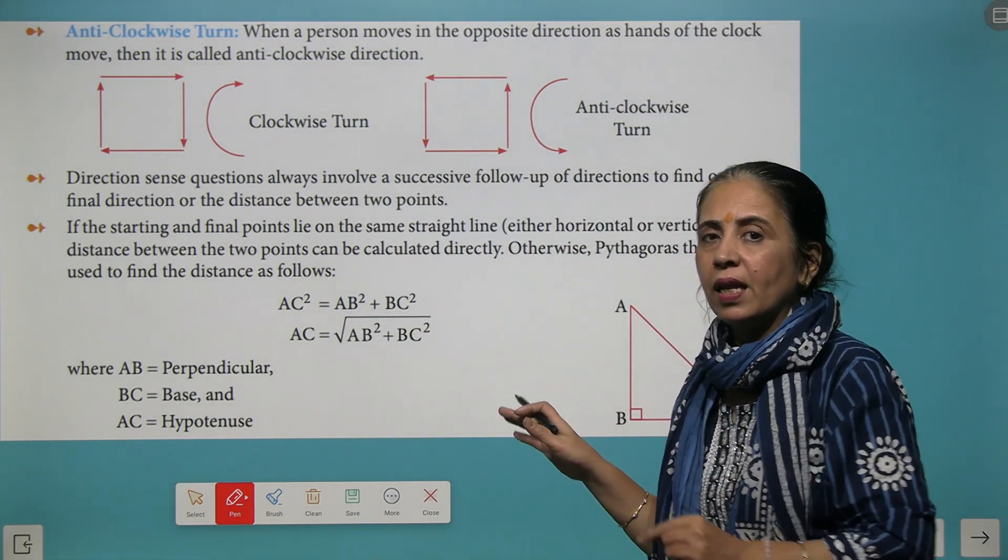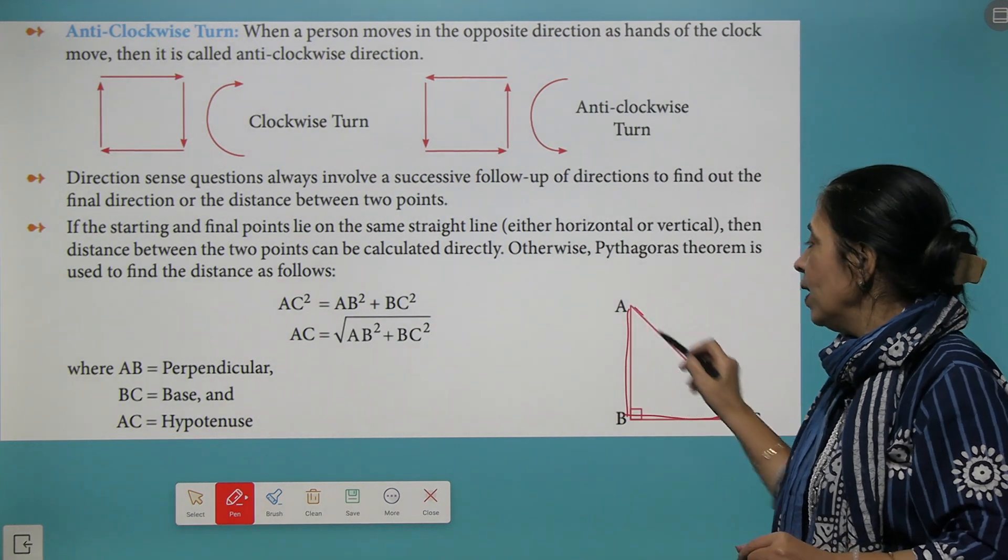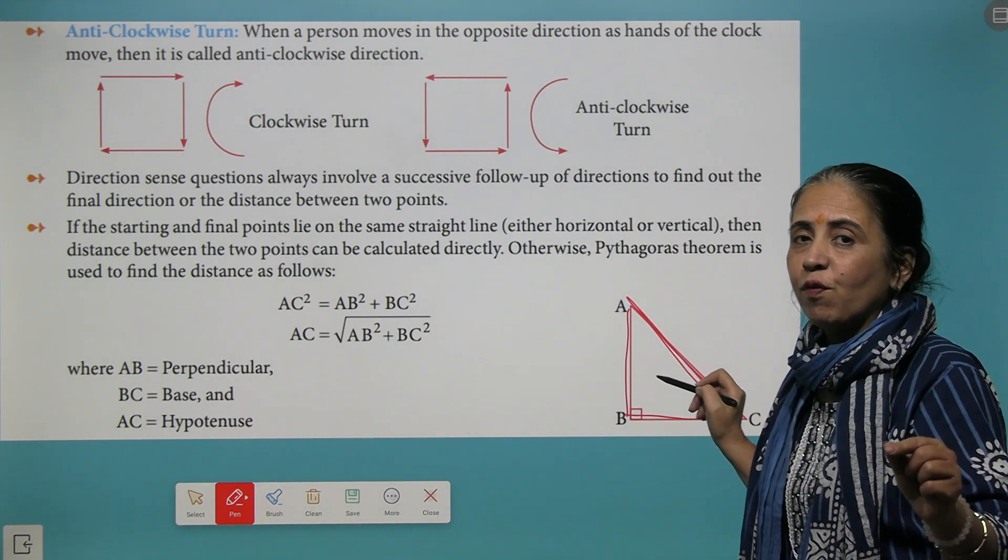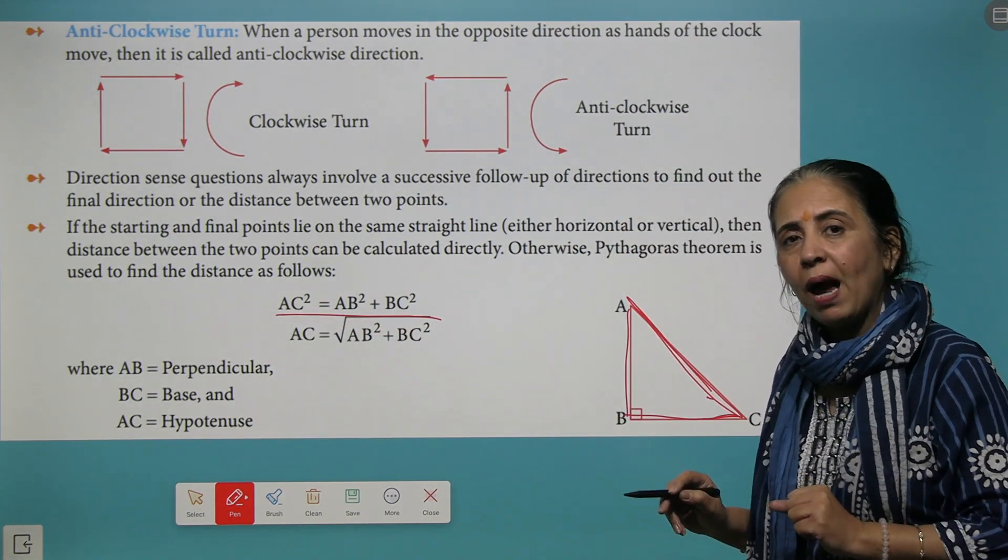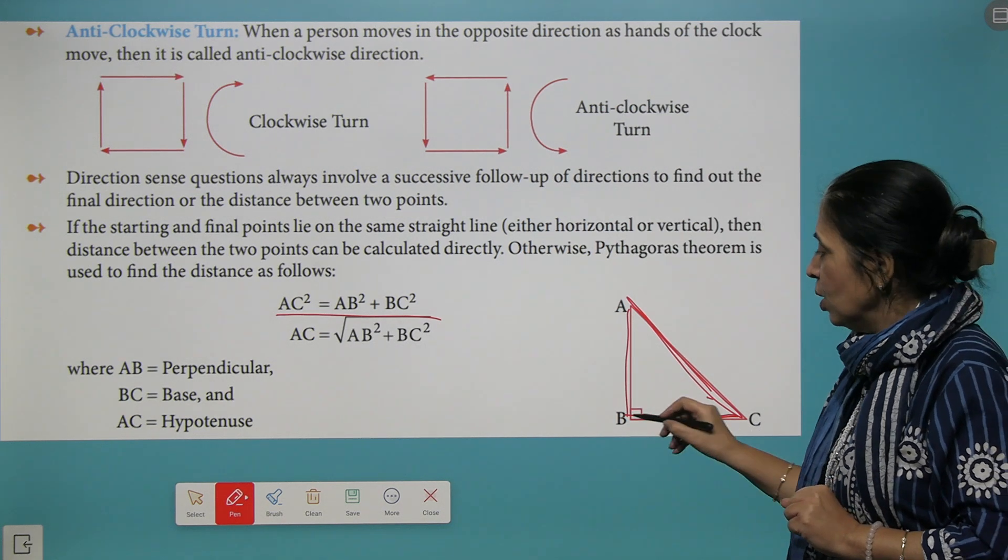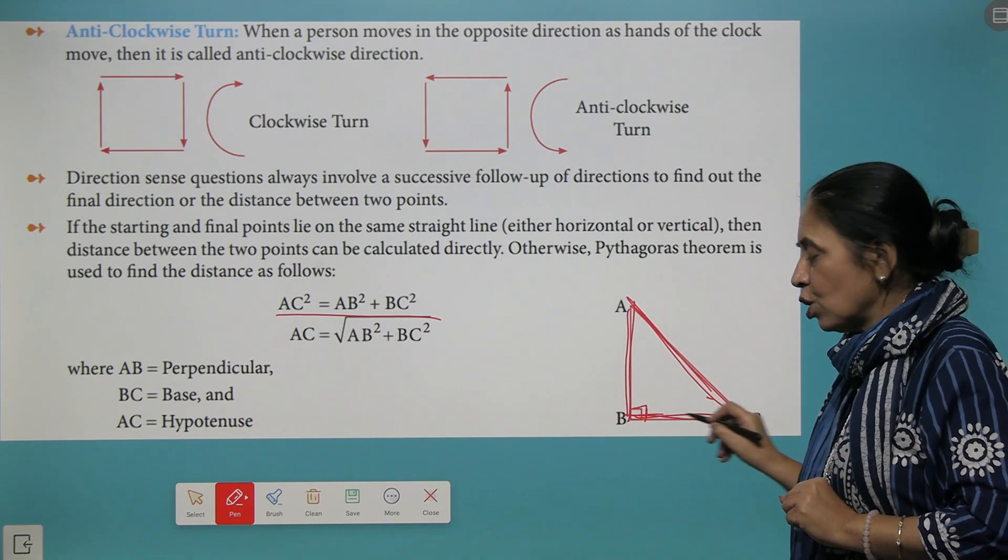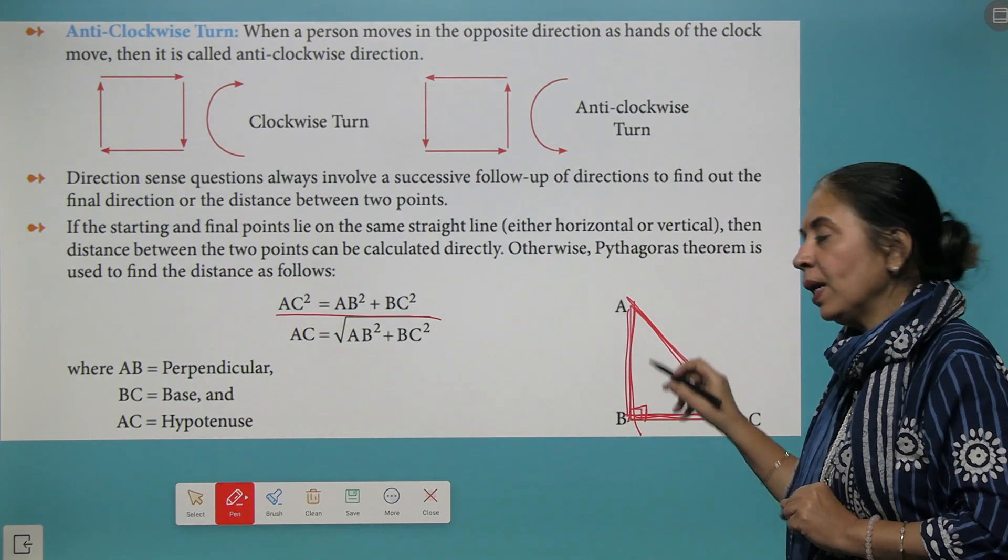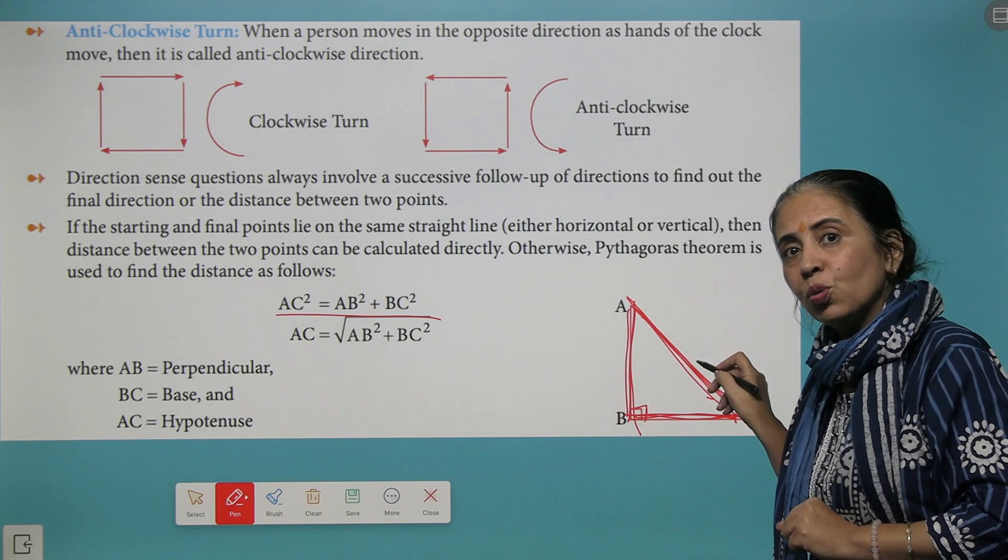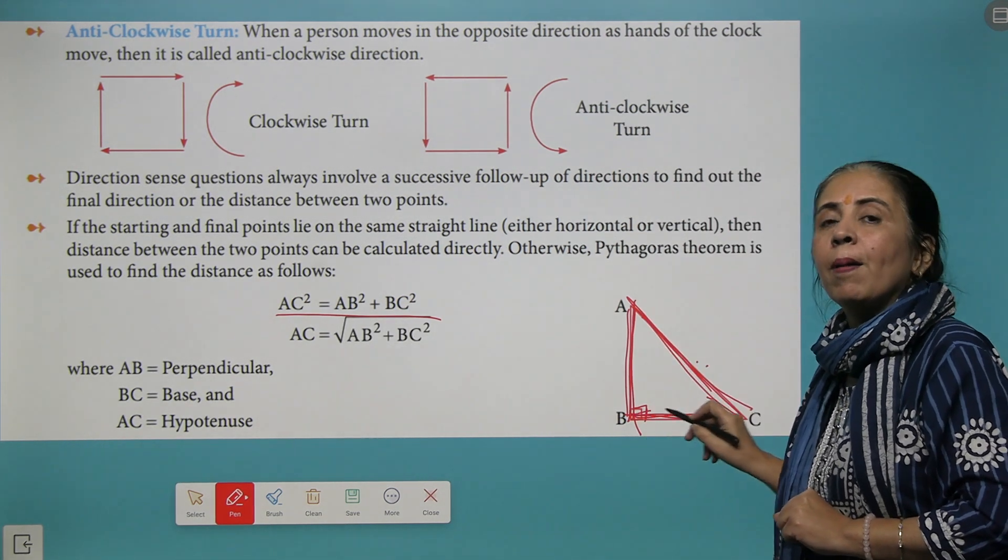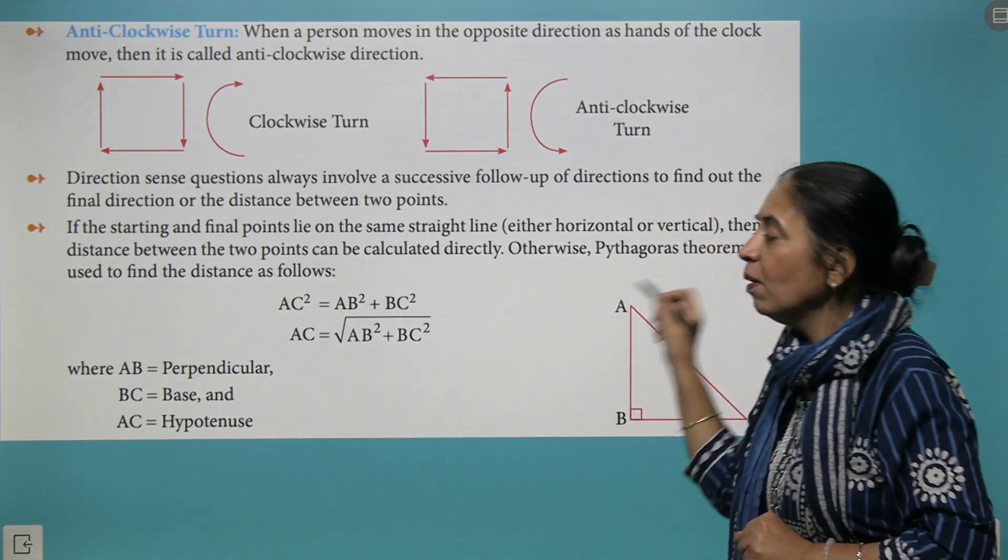But if they are at an angle of 90 degrees, then we need to find the shortest distance, and for that you are going to apply Pythagoras theorem. Pythagoras theorem is only applicable for right angle triangles. If we have two lines coming at 90 degrees, this is called base, this is perpendicular, and this is hypotenuse. If you want to find AC, then square root of AB square plus BC square will give you the value of AC.